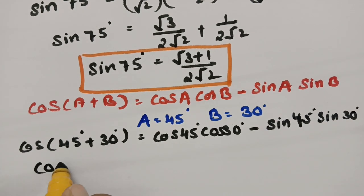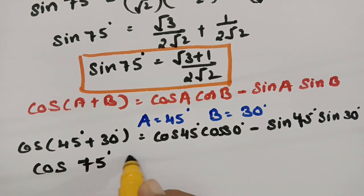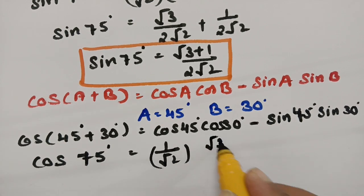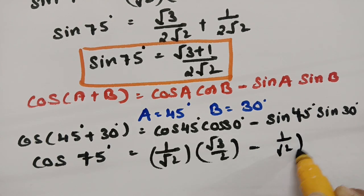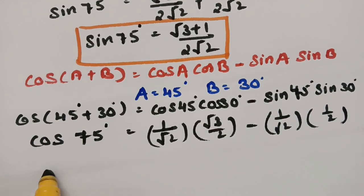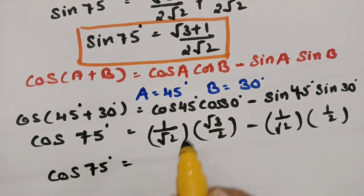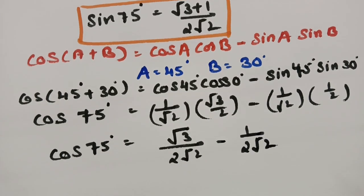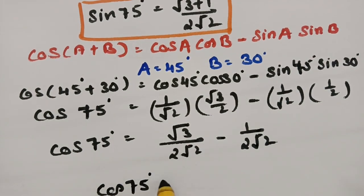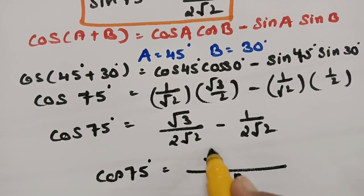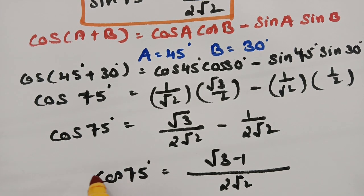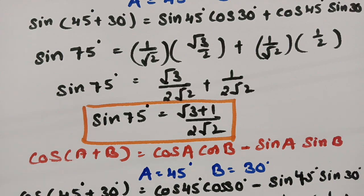Cos of 45 plus 30 is nothing but 75 degrees, equal to cos 45 degrees which is 1 by root 2, into cos 30 value which is root 3 by 2, minus sin 45 degrees which is 1 by root 2, and sin 30 degrees which is half. Therefore cos 75 degrees, if I multiply the numerators, gives root 3 by 2 root 2 minus 1 by 2 root 2. Taking 2 root 2 as LCM, we get cos 75 degrees as root 3 minus 1 by 2 root 2.